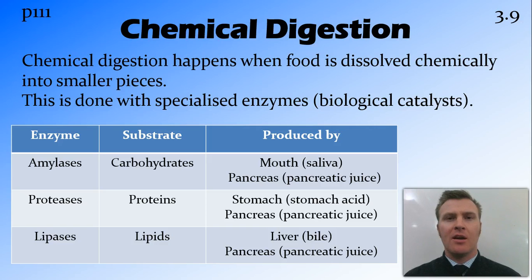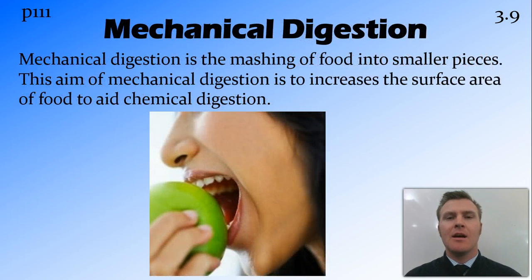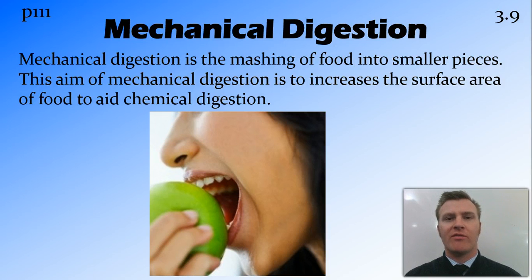But the pancreas is not the only organ that produces these enzymes — they are found elsewhere. Mechanical digestion, rather than involving a chemical reaction, is the breaking up of food into smaller and smaller pieces. The reason we do this is to increase the surface area of that food so that chemical digestion can occur more efficiently.